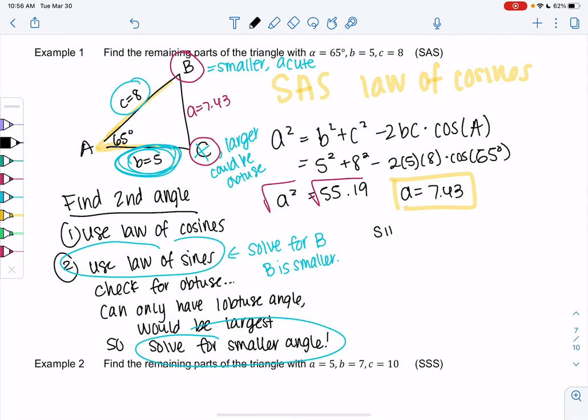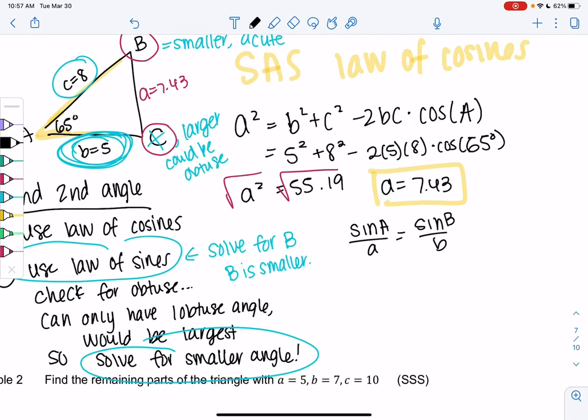So we get sine of A over a, little a. And then we're going to ignore the c. So we're going to use sine of b over b. Again, because b is the smaller angle.